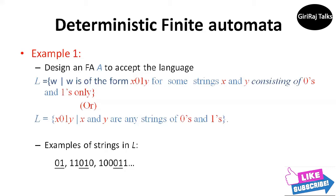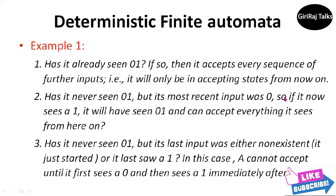To decide whether 0,1 is a substring of the input, the automaton A needs to remember certain conditions. The first condition is: has it already seen 0,1? If so, then it accepts every amount of further inputs — that is, it will only be in accepting states from now on.